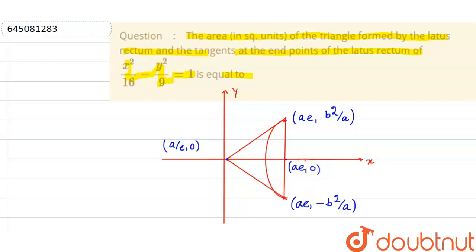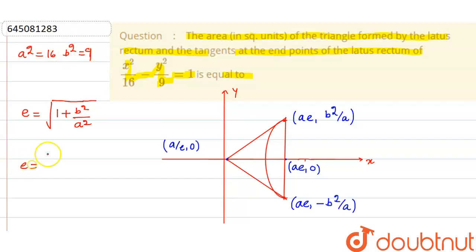We need to first find eccentricity e. For a hyperbola, e = √(1 + b²/a²). Here a² = 16 and b² = 9, so e = √(1 + 9/16) = √(25/16).